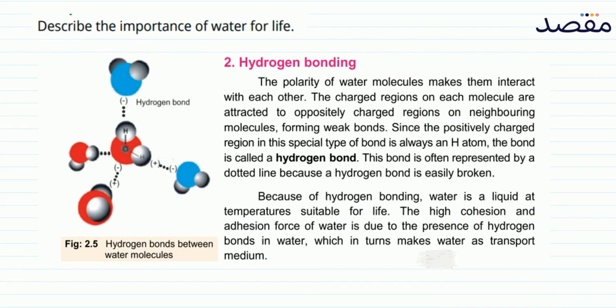Water's polarity means both positive and negative charges are present. Because opposite charges attract, weak bonds form between water molecules — these are called hydrogen bonds, represented by a dotted line. The dotted line shows that the bond is weak and can break. Hydrogen bonding is a unique property of water.